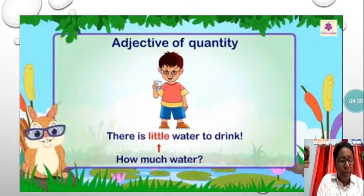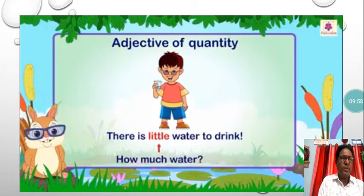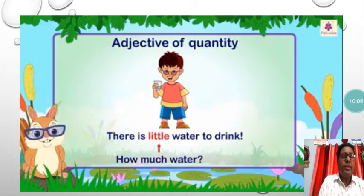But when you tell the same thing in order — first, second, third, fourth, fifth, seventh, tenth — then this order is called ordinal numbers.